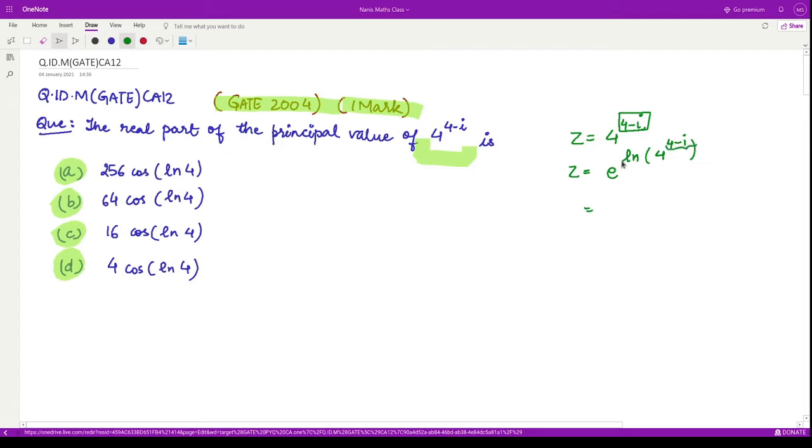This uses the property that log of a to the b equals b log of a. So here we have e raised to power 4 minus iota, and this comes to the front, so we have log of 4.